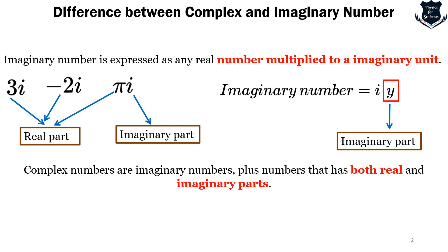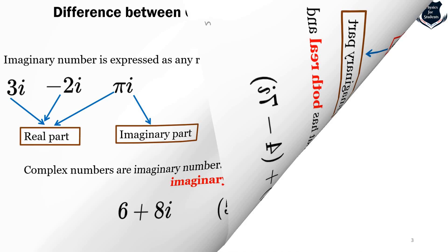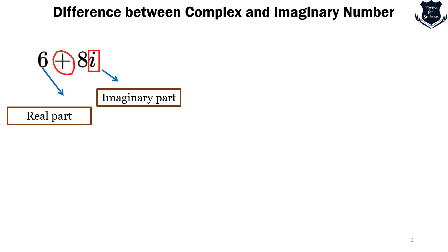An imaginary number is a real number multiplied by the imaginary unit, while complex numbers include imaginary numbers plus those that have both real and imaginary parts. For example, 6+8i, 5−3i, or 4−7i are complex numbers. In 6+8i, the 6 is the real part and 8i is the imaginary part, joined by a plus or minus operation.